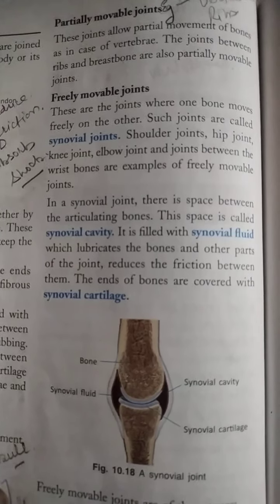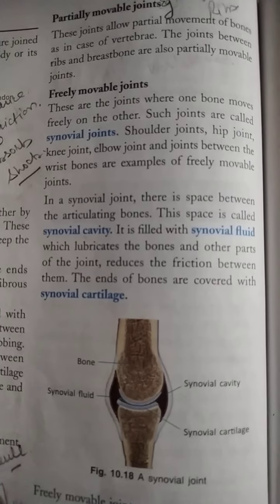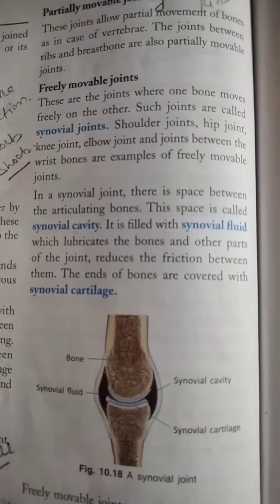Freely movable joints are joints where one bone moves freely on the other. Such joints are called synovial joints. These joints are usually found at the shoulder joint, hip joint, knee joint, elbow, and the joint between the wrist bones. Thank you and have a nice day.